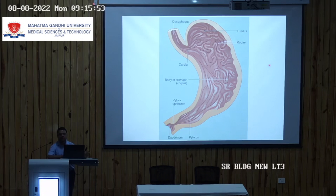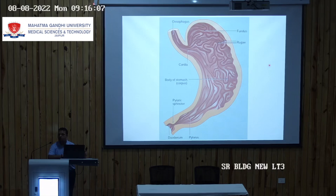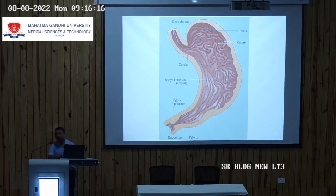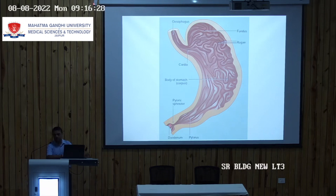GERD can result in Barrett's esophagus, which involves columnar metaplasia. At the lower end, ulcers can form in the stomach and simultaneously in the duodenum — collectively known as Peptic Ulcer Disease, comprising both Duodenal Ulcer and Gastric Ulcer. The body of the stomach is where most acid secretion takes place.